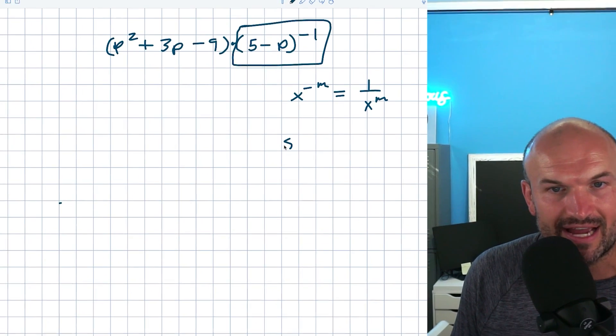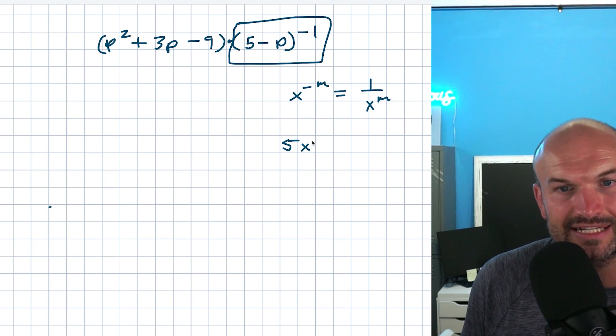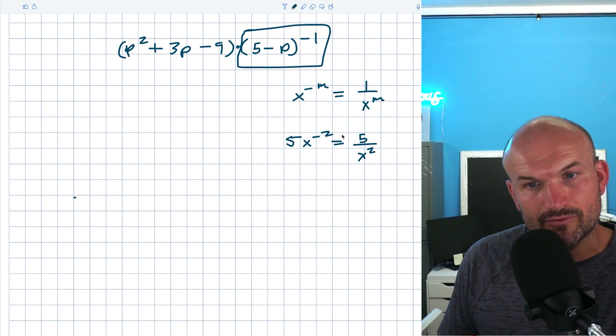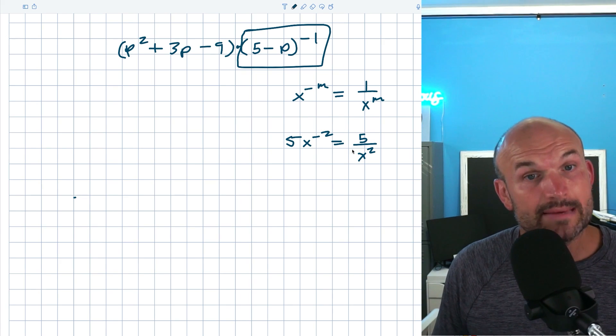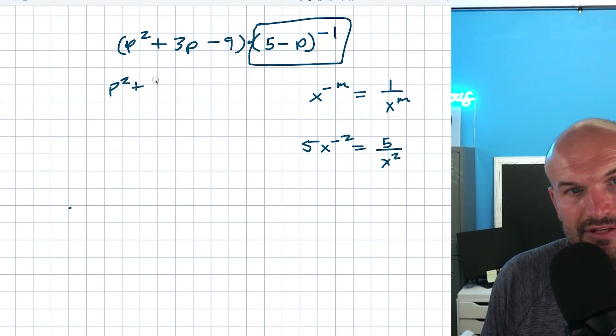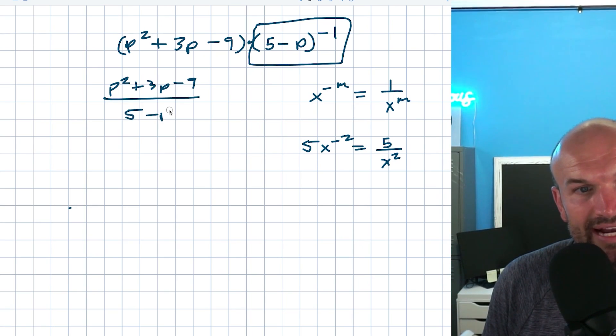So for an example, if I have like 5 times x to the negative second power, I can rewrite that as 5 over an x squared, right? So whenever we have something raised to a negative power, I can rewrite that as the reciprocal or in the denominator here as a positive power. So the real way I want to be able to write this is p squared plus 3p minus 9 divided by 5 minus p.